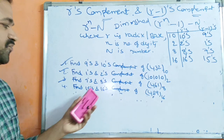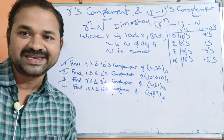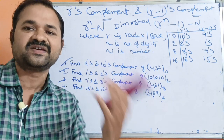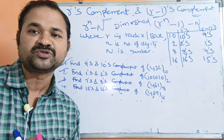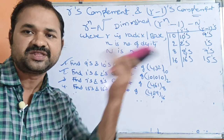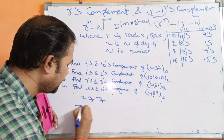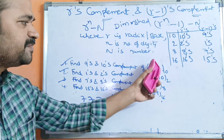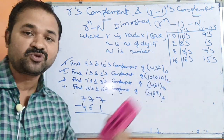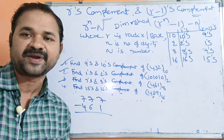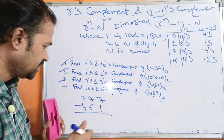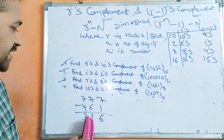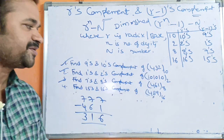Third problem: find 7's and 8's complement of 461 base 8. For 7's complement, subtract from 777 (three 7's, since 461 has 3 digits). 7 minus 1 is 6, 7 minus 6 is 1, 7 minus 4 is 3. So the 7's complement is 316.